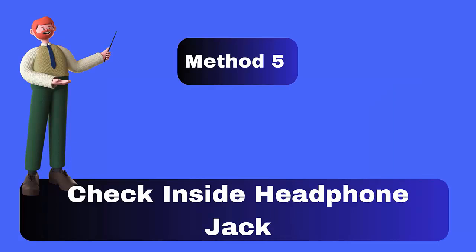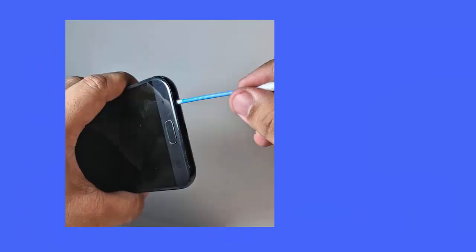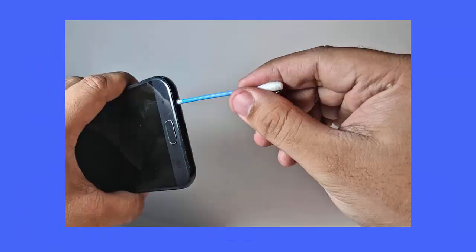Method 5: Clean inside the headphone jack. You should check your phone's headphone jack properly, as some dirt may be stuck inside. It may not be easy to find visible evidence, but dirt can really cause your Android phone to get stuck in headphone mode.